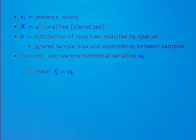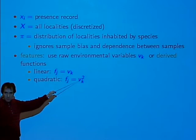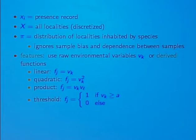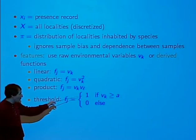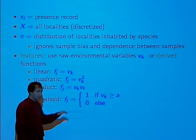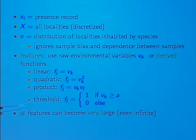But you could do other things — you could start making up features based on the environmental variables you already have. You could add quadratic features, such as a feature equal to temperature squared or altitude squared. You could add product features — the product of temperature and altitude. Or you could add threshold features: a feature equal to one if some environmental variable is bigger than some threshold and zero otherwise.